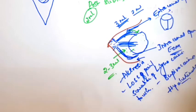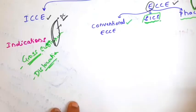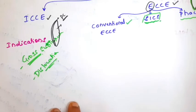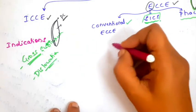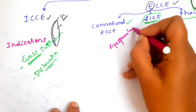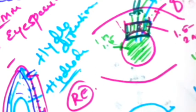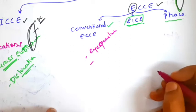Coming to the steps of small incision cataract surgery. After anesthesia is achieved, the patient is made to lie down on the operating table. The eye to be operated is painted and draped. After that, the universal eye speculum is placed and the eyelids are retracted. The first step is placing the bridal suture — you hold the superior rectus muscle with superior rectus forceps and pass a thread below it. This places the eyeball in downgaze, providing more operating space, and also stabilizes the globe.